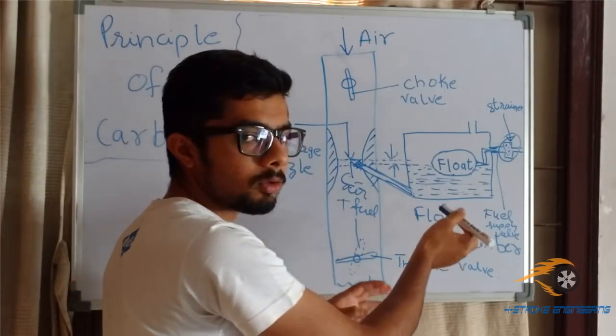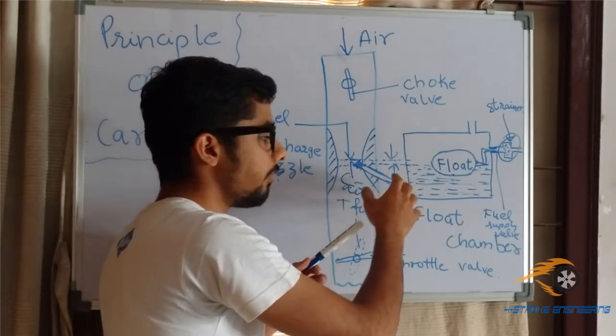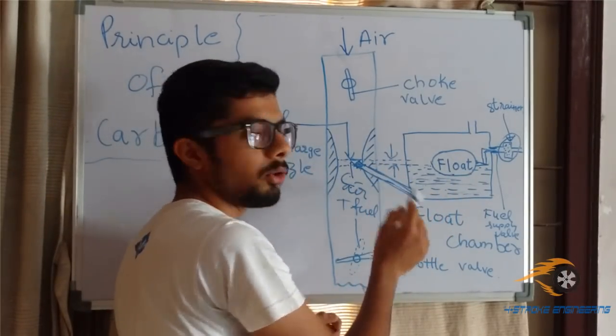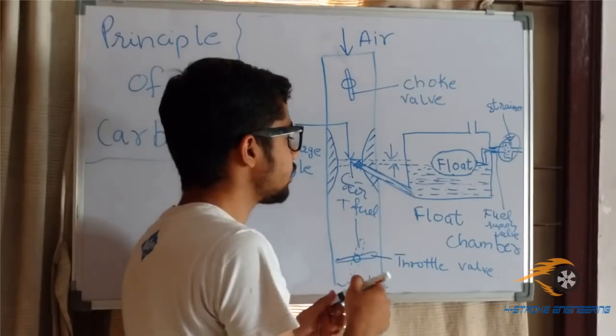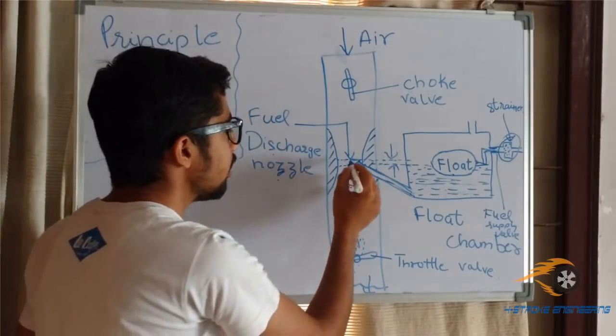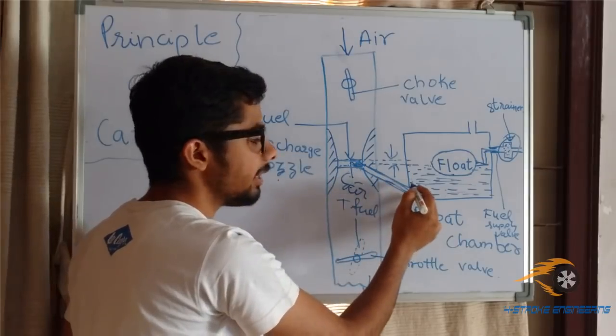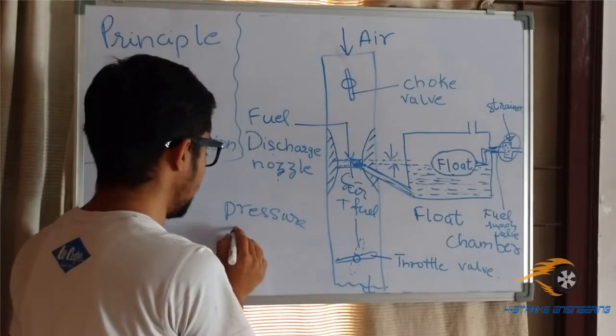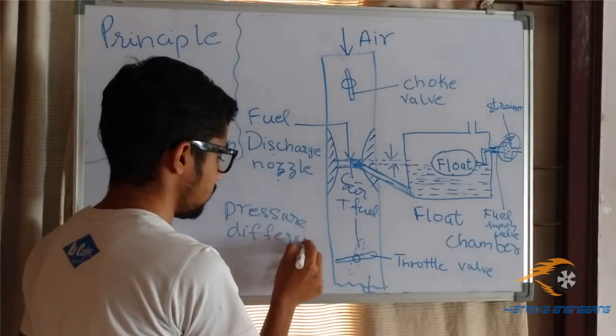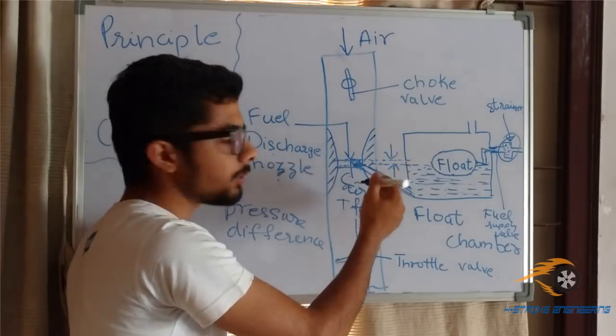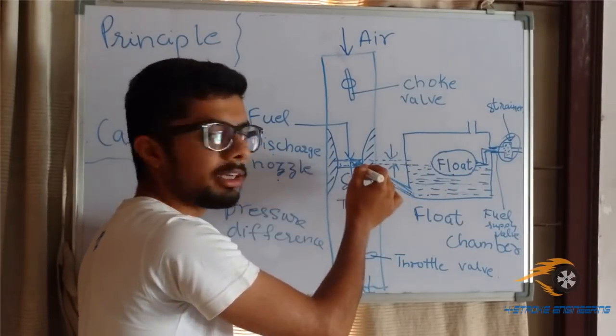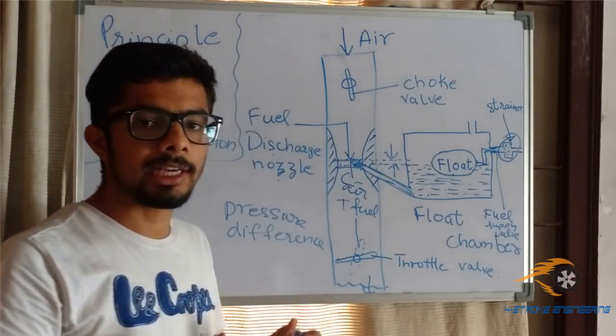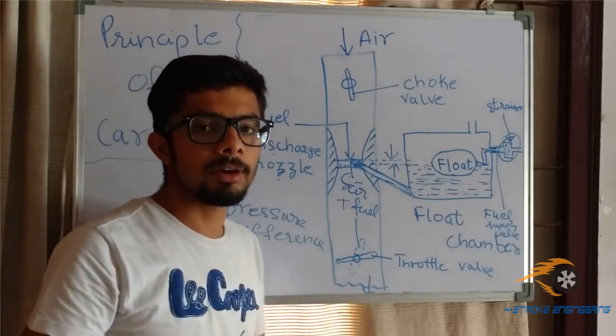Now after explaining the float chamber, I move on to the carburetor, which is the main part is venturi. Now from here, as I explained to you earlier, that due to the suction pressure, there is a pressure differential between this venturi and this float chamber. Pressure difference. This is a very important term in carburation. Due to pressure difference between the venturi and the float chamber, the fuel is sucked in, the homogeneous mixture of fuel and air takes place, and then the charge gets passed through the combustion chamber.